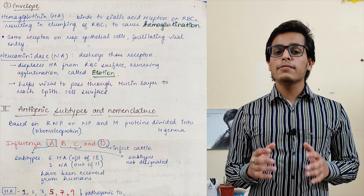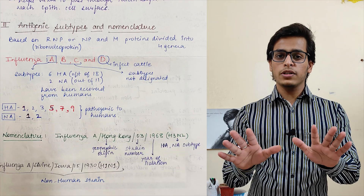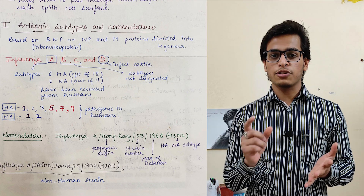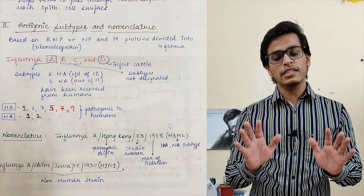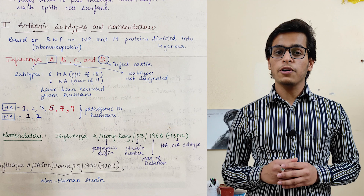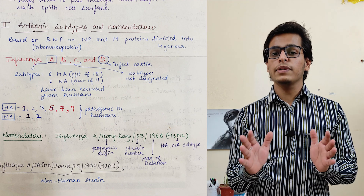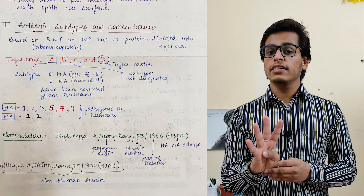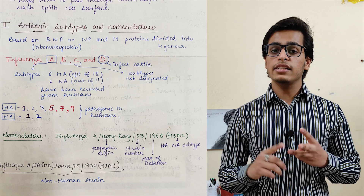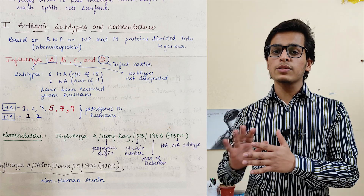After morphology, we will talk about antigenic subtypes and nomenclature. I know these topics are boring, but believe me, they will be asked in MCQs or short notes. Influenza virus, on the basis of matrix proteins and ribonucleoproteins, has been divided into 4 genera. Out of these, only 3 infect humans: Influenza A, Influenza B, and Influenza C. Influenza D is only in cattle, so we will not cover it.